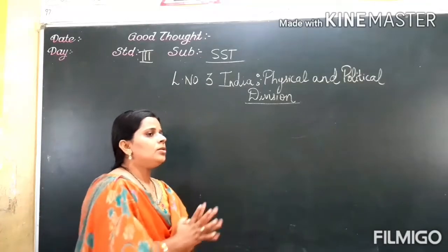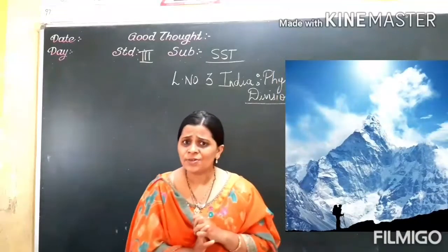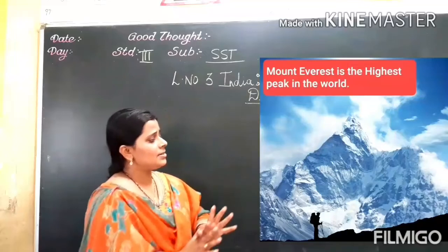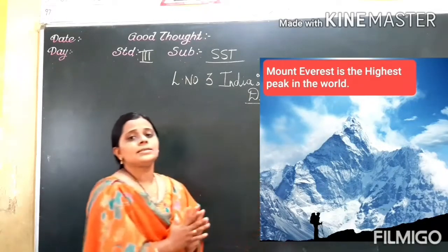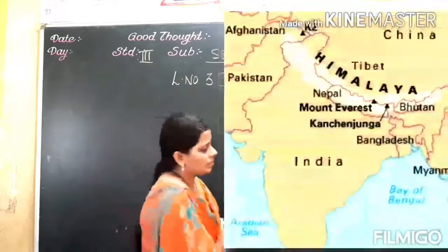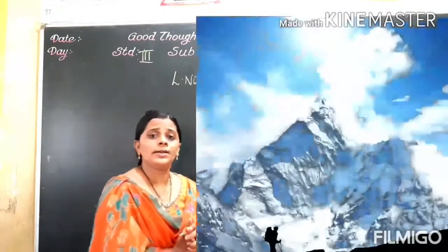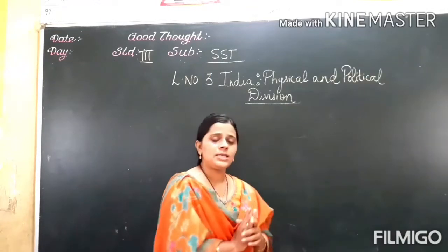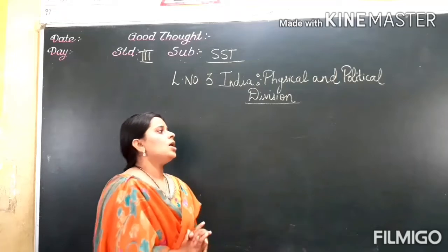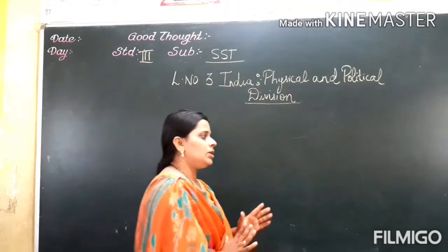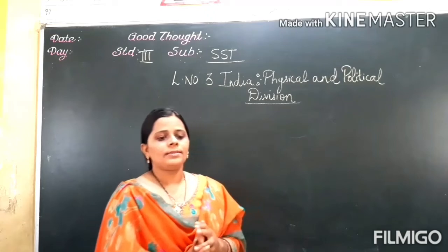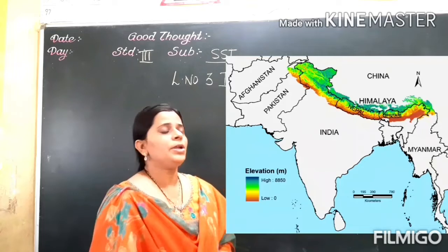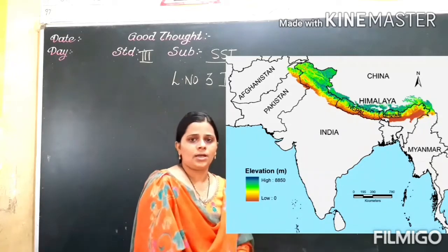Here, Mount Everest — you know about Mount Everest? It is the highest peak in the world, and it is located in Nepal. Its height is 8,850 meters. So the Northern Mountain contains the highest peak in the world. Also, the Northern Mountain shares the boundary between India and China.